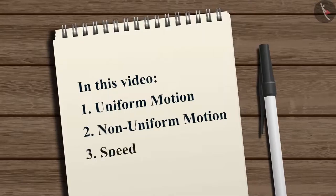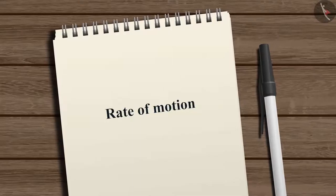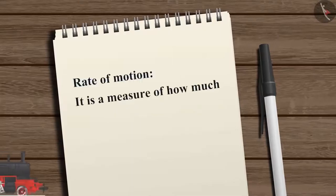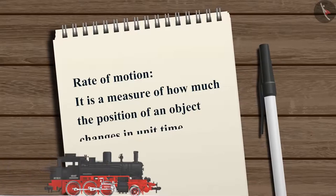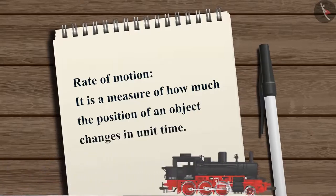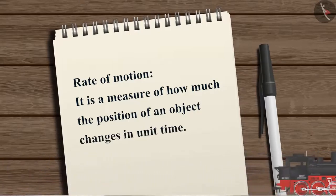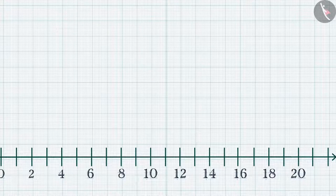Let's first understand what we mean by rate of motion. It is a measure of how much the position of an object changes in unit time. For example, consider a car in motion that starts from the origin.